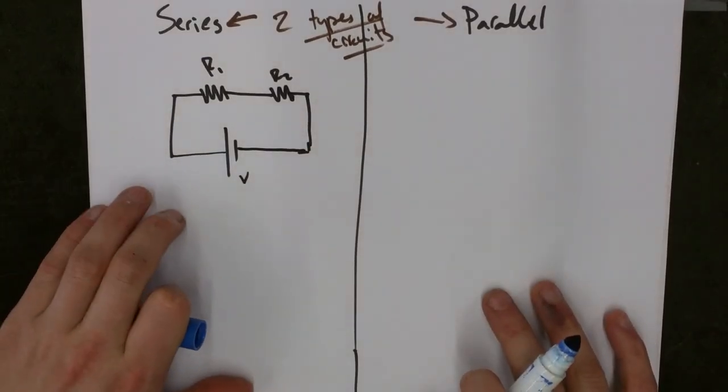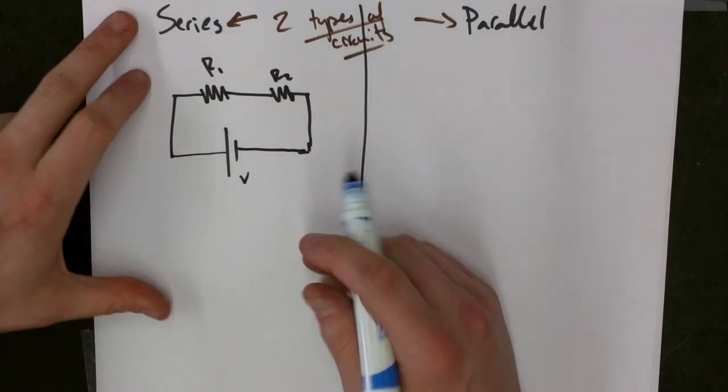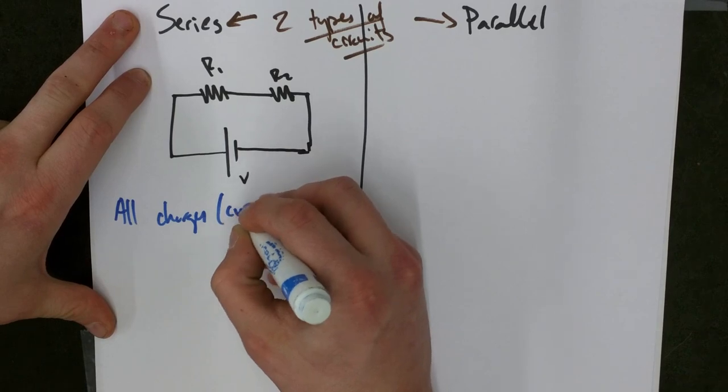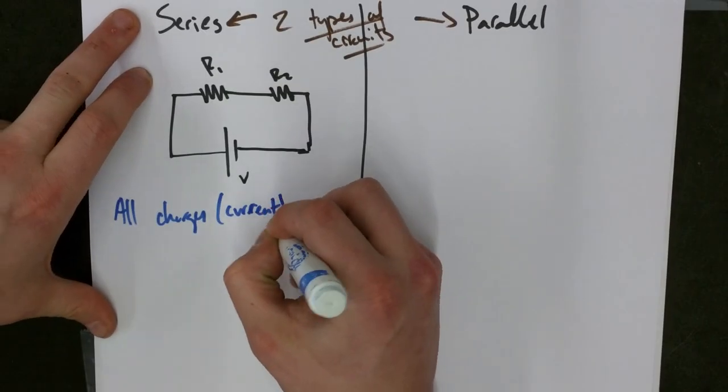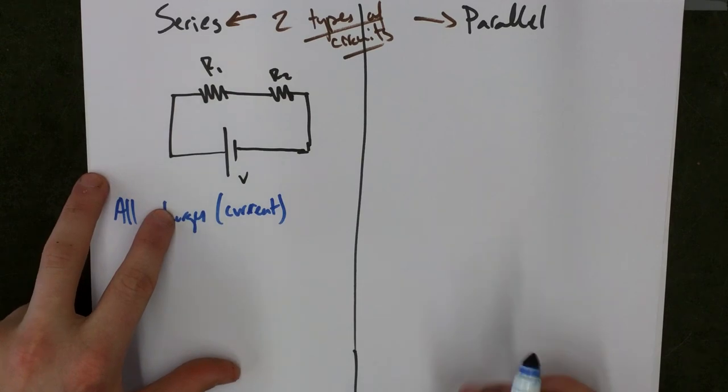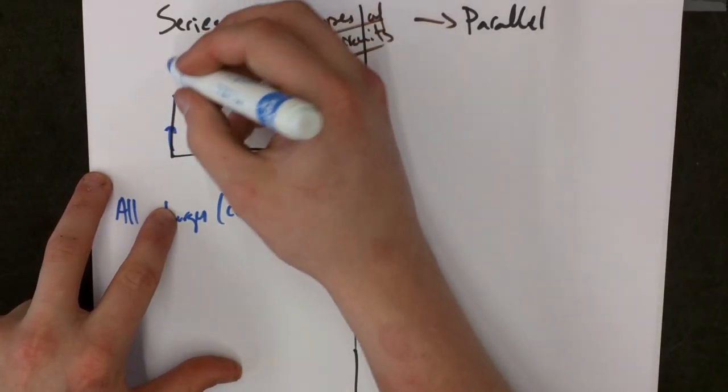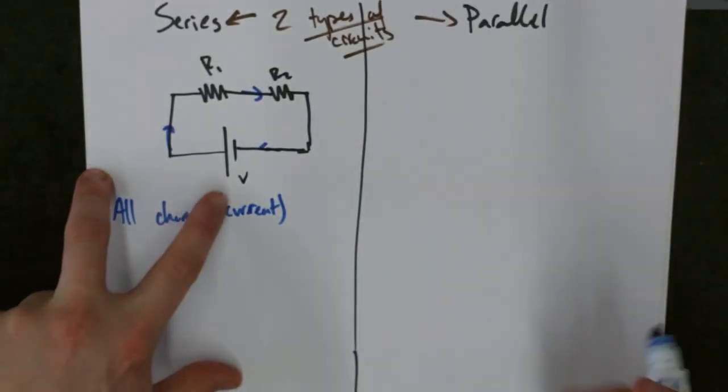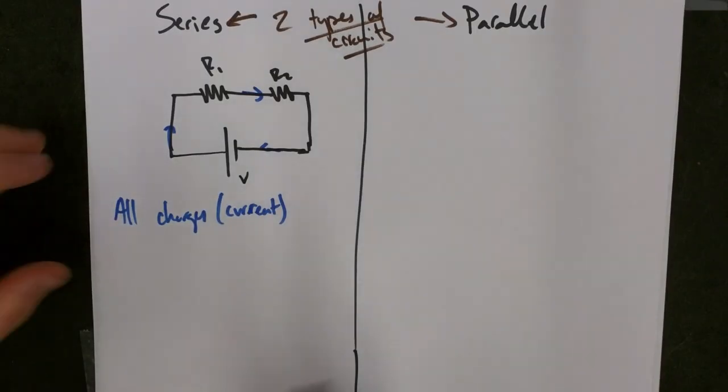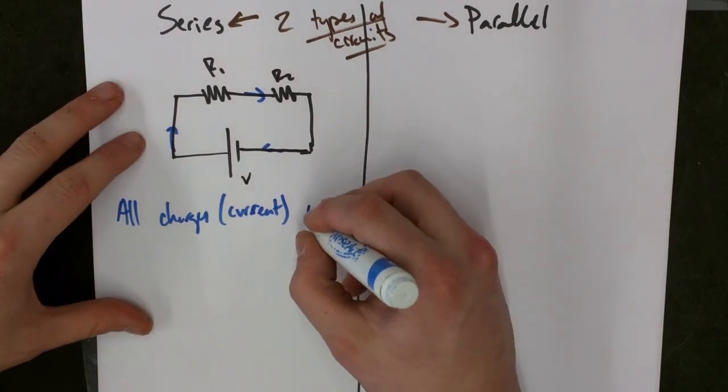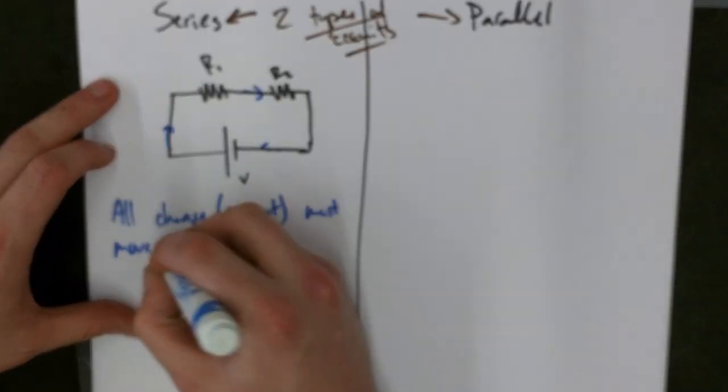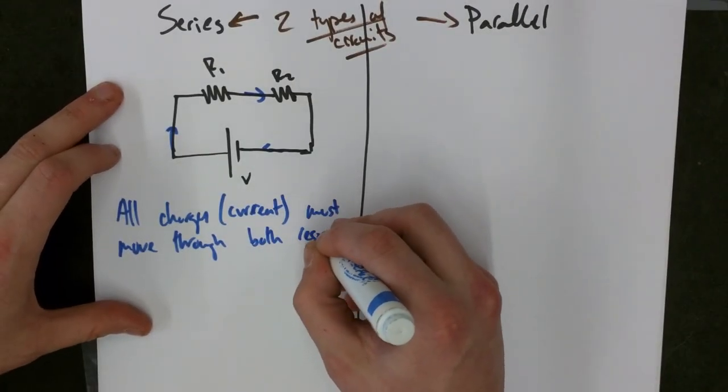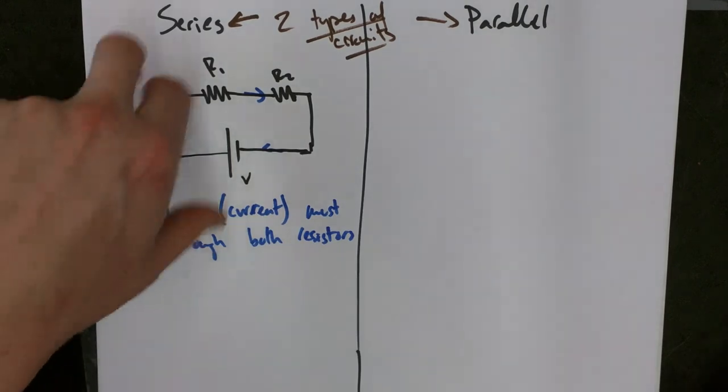Now, notice here about the series circuit. All charges, or better yet, all the current, must flow through both resistors. Here I have my current, and it's flowing through R1, and then it flows through R2, and then it's back to the other end of the terminal. So all charges must move through both resistors. Or if I have more than two, it just flows through all of them.